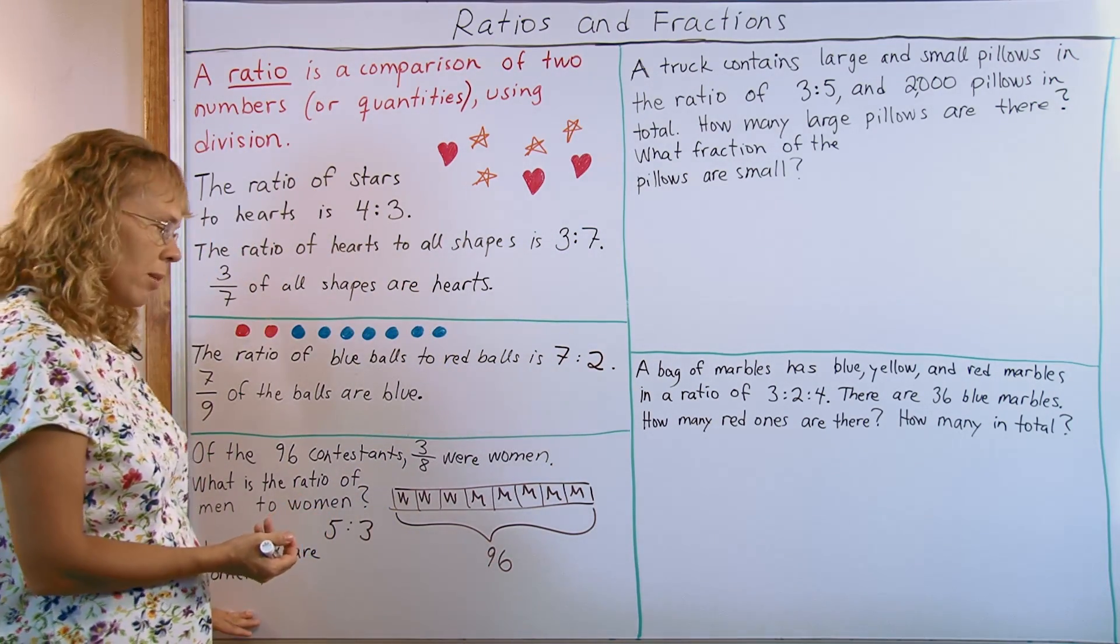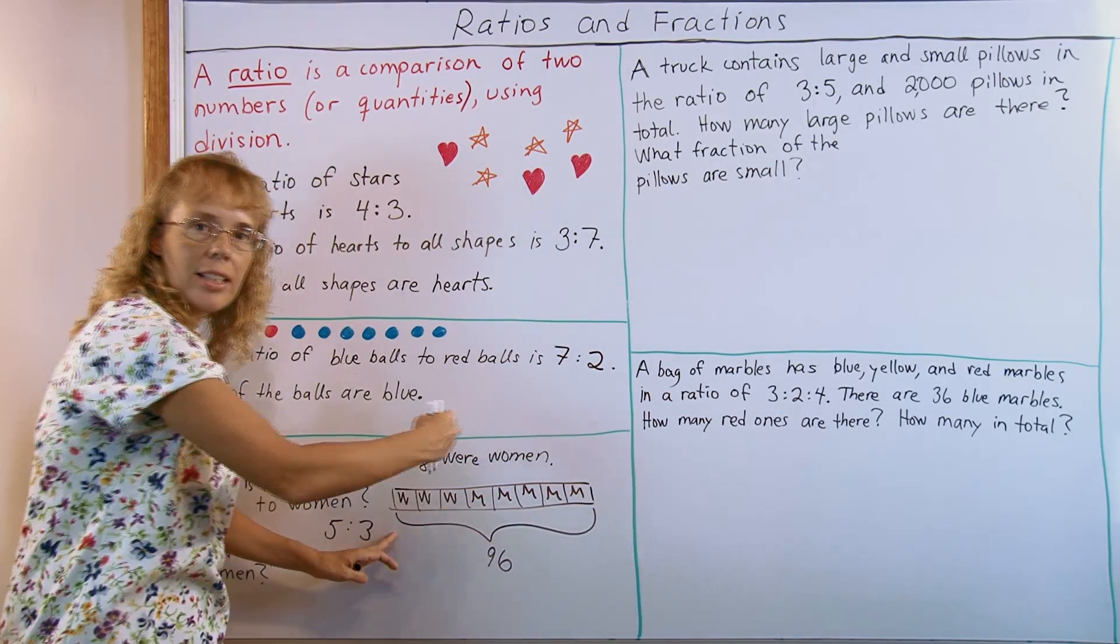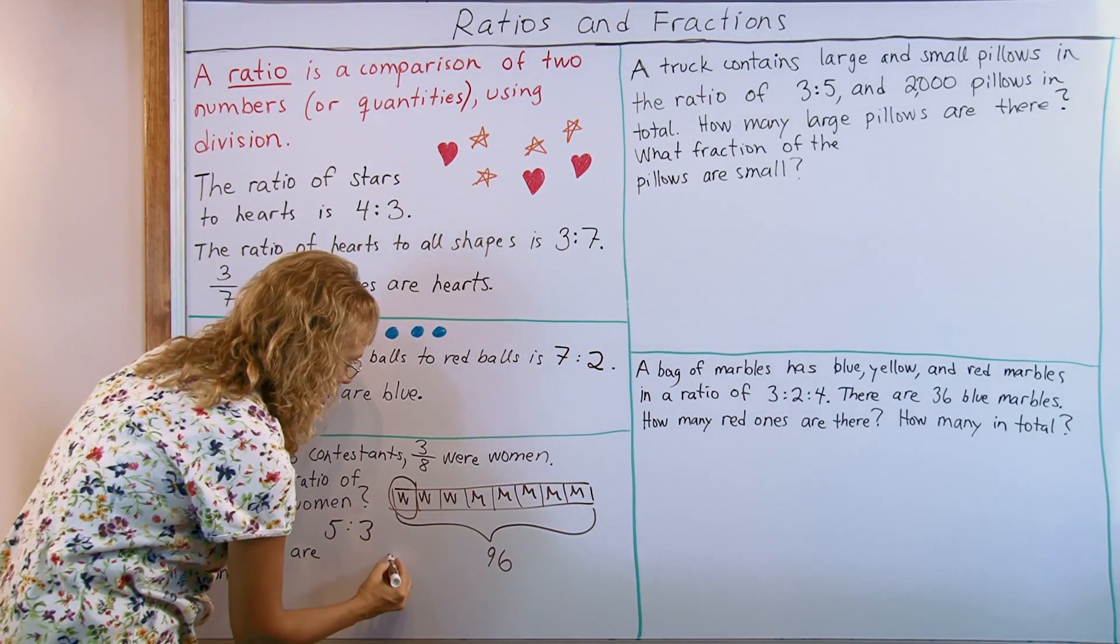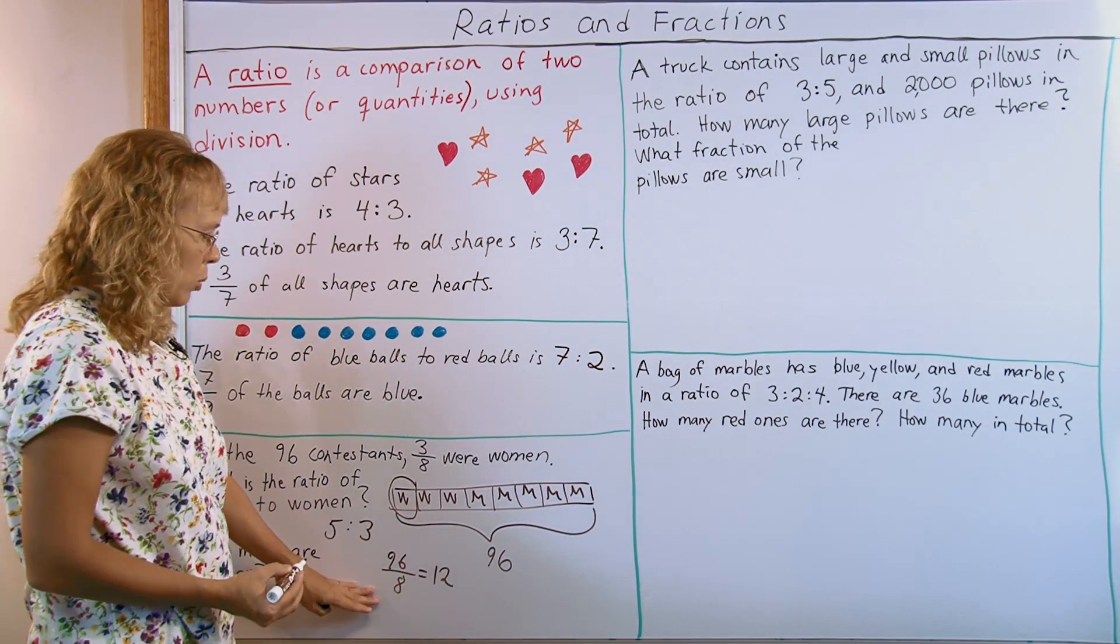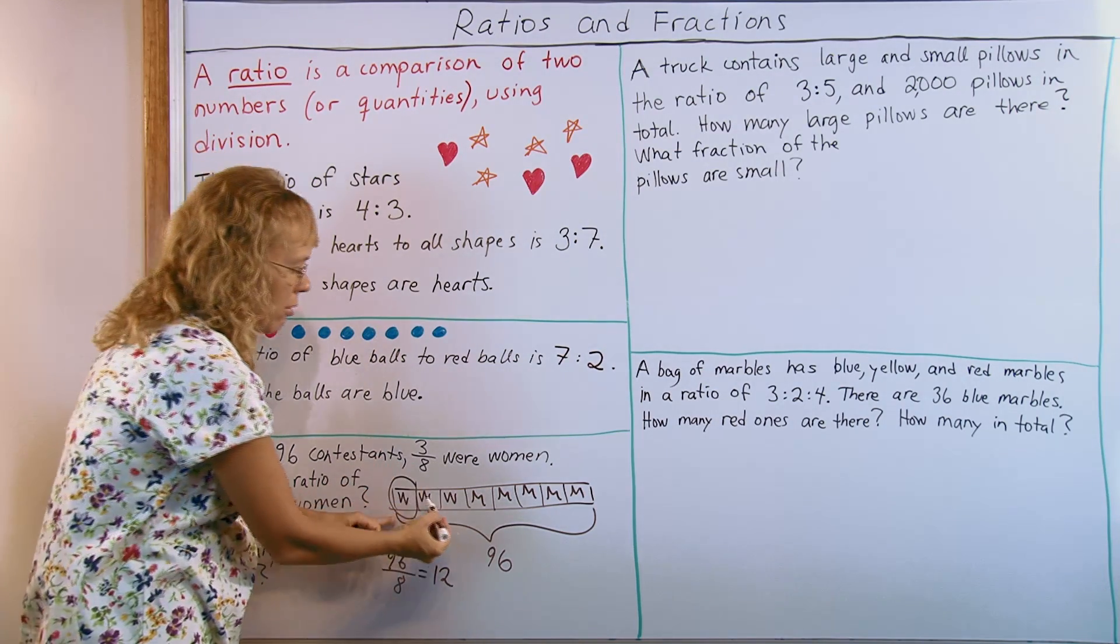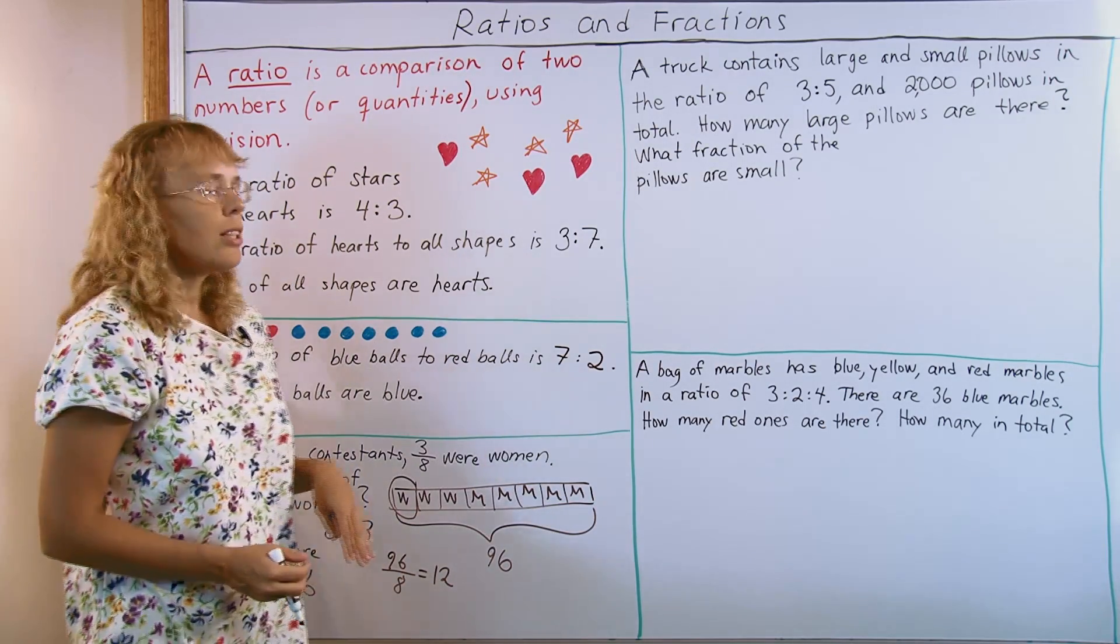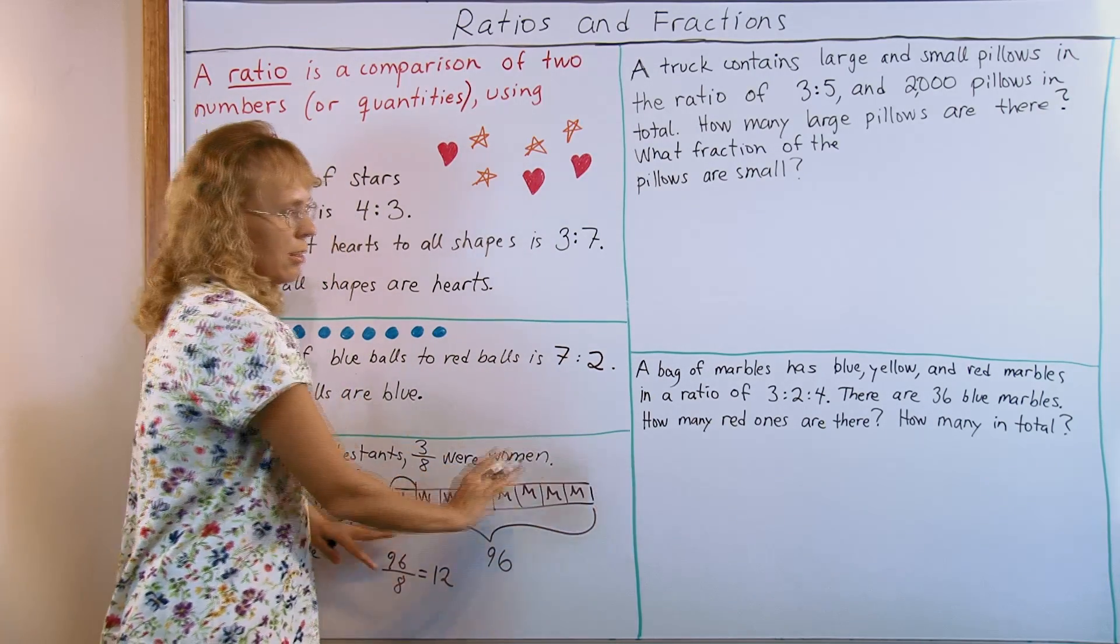How many are women? It tells us the total number of contestants, so I'm going to mark it here on the diagram like this. There's 96 in all, and it's asking how many are women. Since there's 96 in total and 8 equal parts, I will divide 96 by 8 to find how many are in this one part here. 96 divided by 8 equals 12. So one block here is 12 and there's 3 of those blocks for women, so there's 36 women.